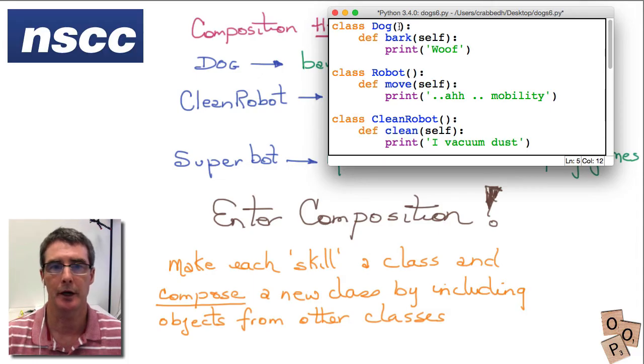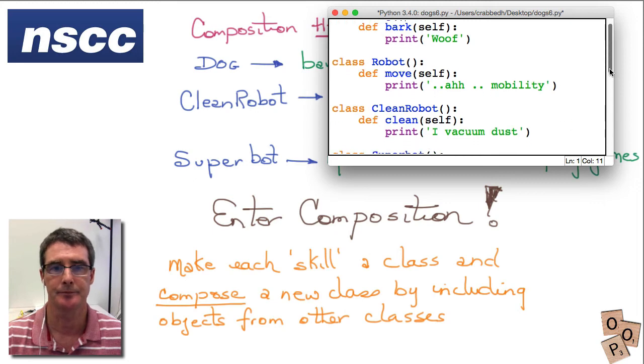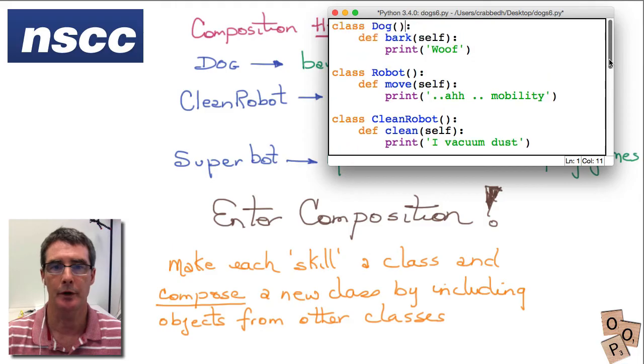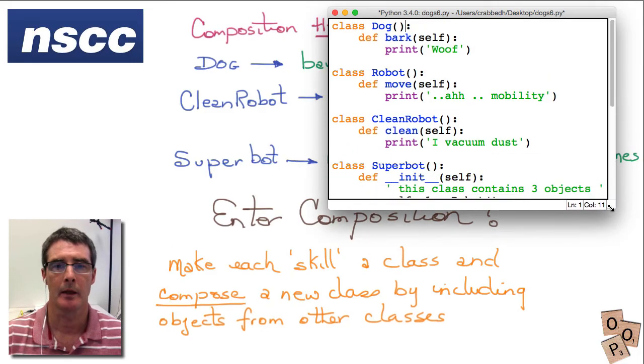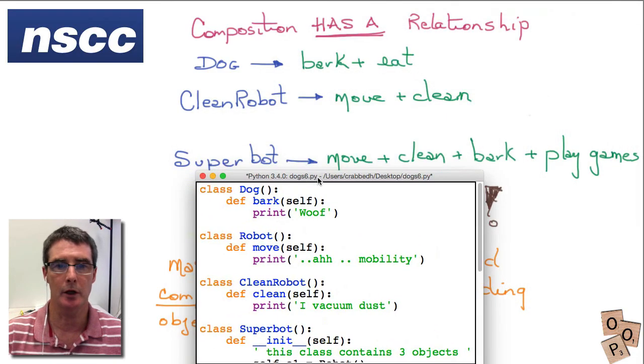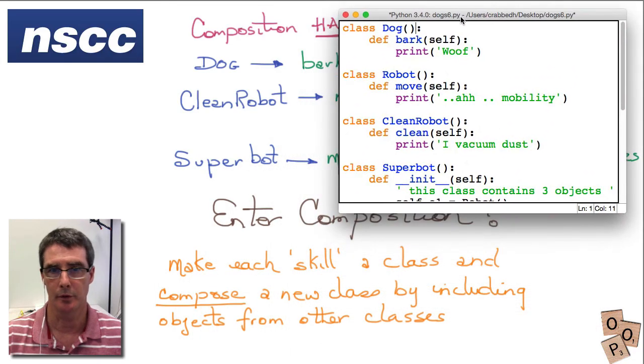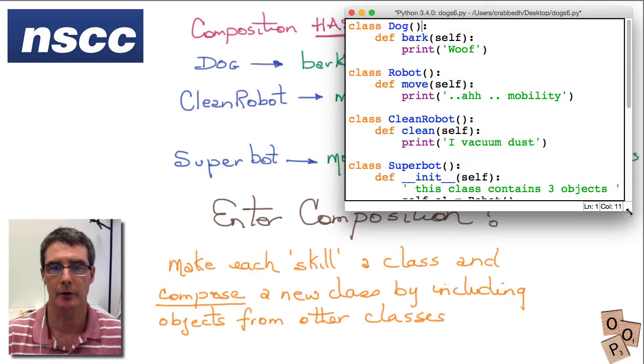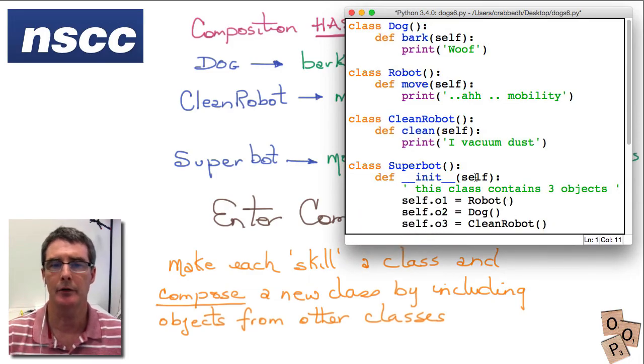So now what we want to do is create our super bot. And our super bot has some of these skills if we look, the move, the clean, and the bark which we've defined before because we've reused these in other objects. And the way to do this is to create an initialization overridden method here that creates objects inside it. So this class has its own objects. And it creates an object. I've used 01 here for the first object. It's created a robot object. And what can a robot object do? It can move. It's created a dog object which can bark. And it's created a clean robot object that can vacuum. Again, we're not using inheritance here.